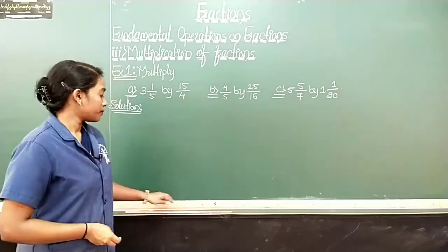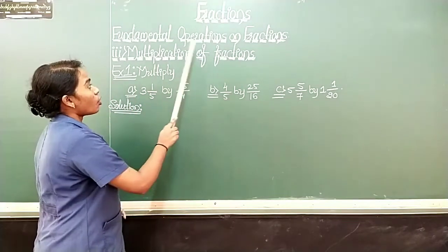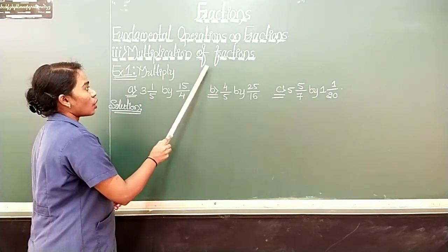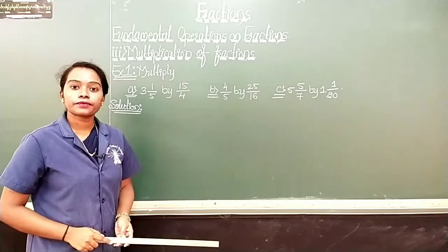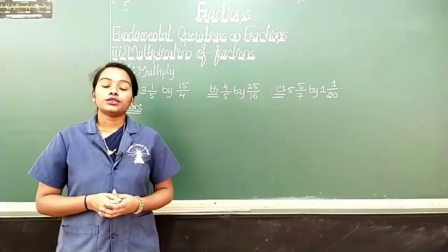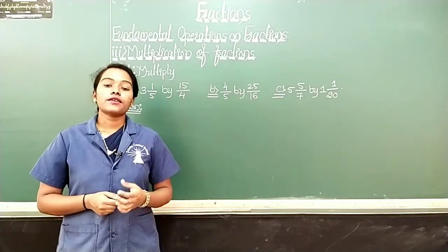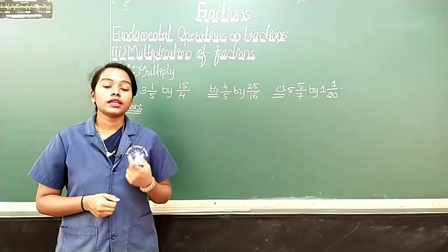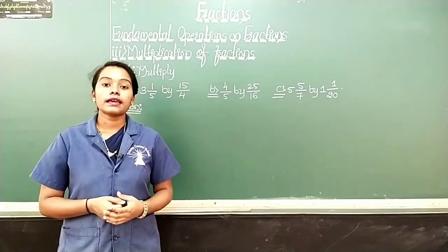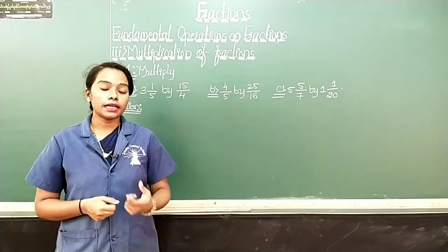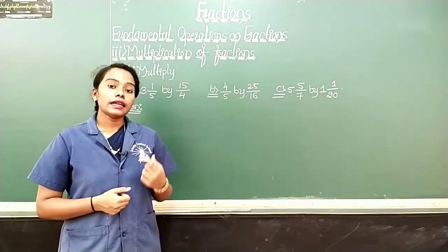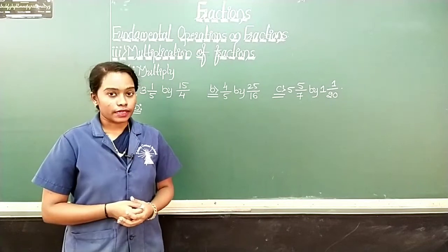See here — fundamental operations on fractions. The third one is multiplication of fractions. To multiply two fractions, we have to cancel out the common factors from the numerator and denominator of the fractions. And after that, we have to multiply them to get the required product. Let us understand that by solving an example.